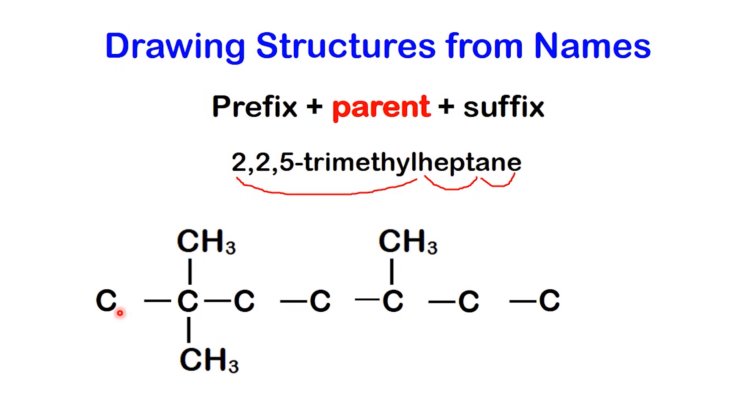Carbon 1 is at the end of the chain. It's attached to only one carbon, so it still needs three hydrogens. Carbon 2 already has four bonds—one to carbon 1, one to carbon 3, and two to the methyl groups. That means it's completely satisfied and doesn't need any hydrogens.